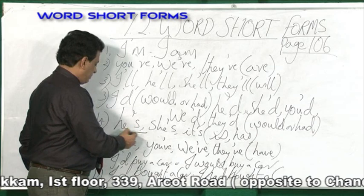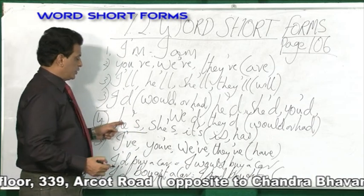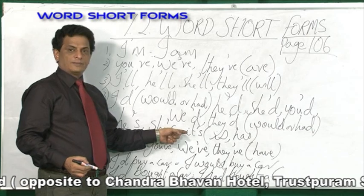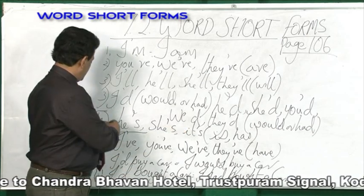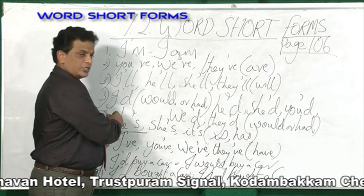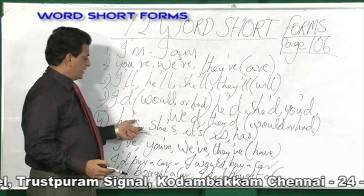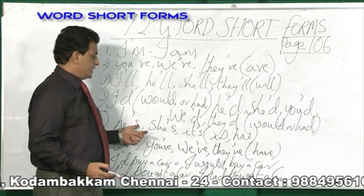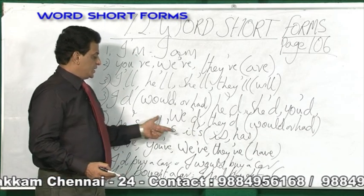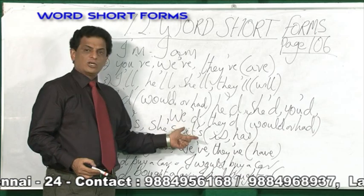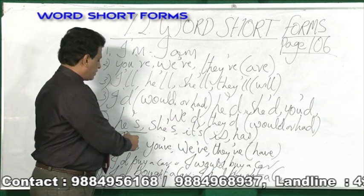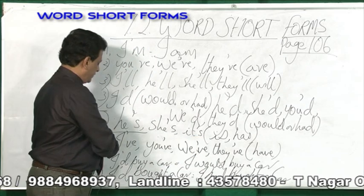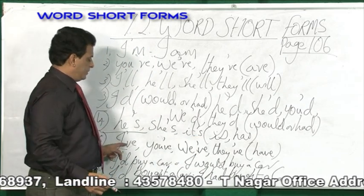Here number 5: he apostrophe S, she apostrophe S, it apostrophe S — it can be he is or he has, she is or she has, it is or it has. And here, I apostrophe VE, you apostrophe VE, we apostrophe VE, they apostrophe VE — it means I have, you have, we have, they have.